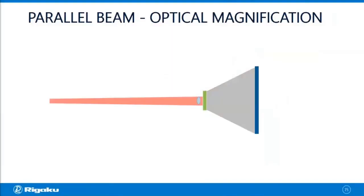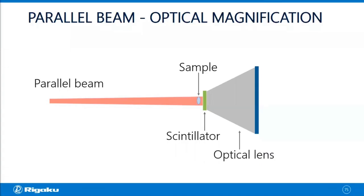For the parallel beam geometry, we use optical magnification. So you have a parallel beam, and you don't have a lot of divergence. Then you put the sample right up against a scintillator, which converts x-rays into visible light so that you can use optical lenses to do the magnification.